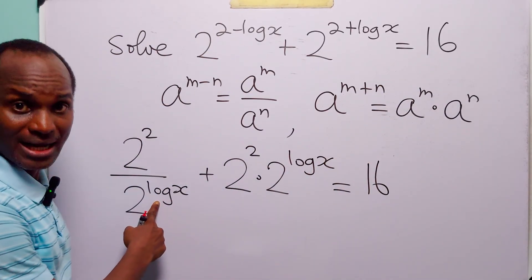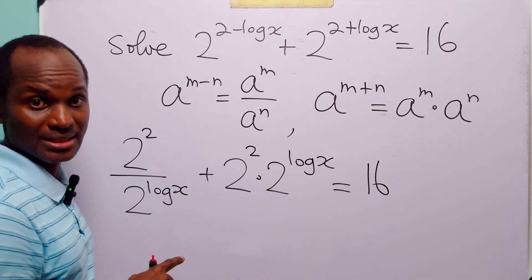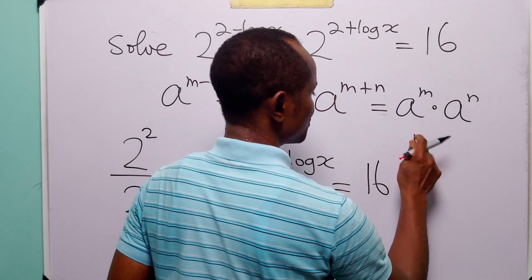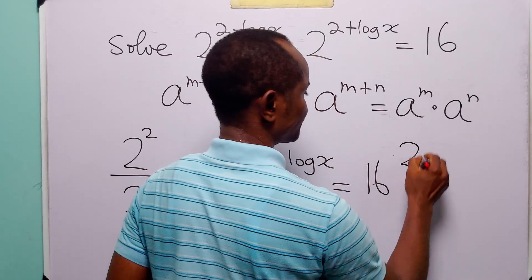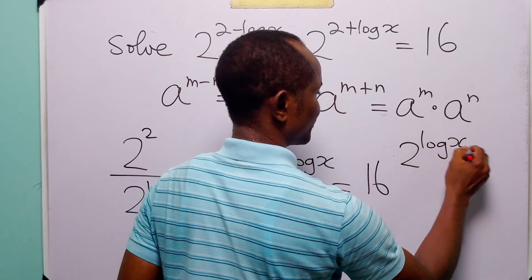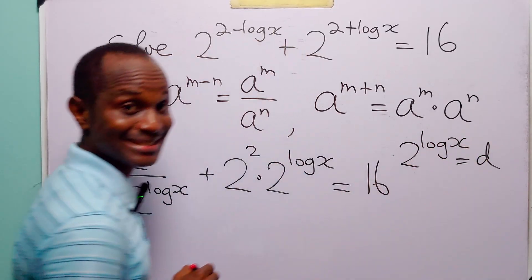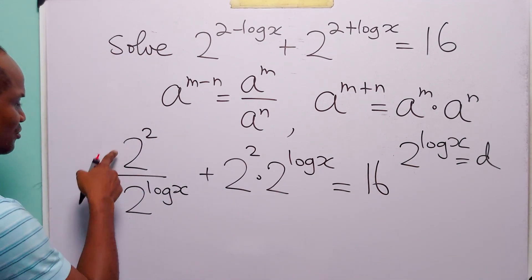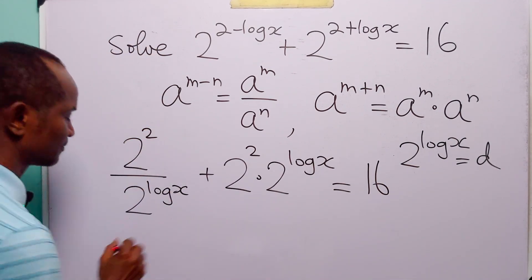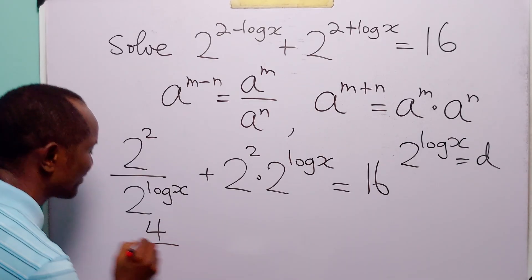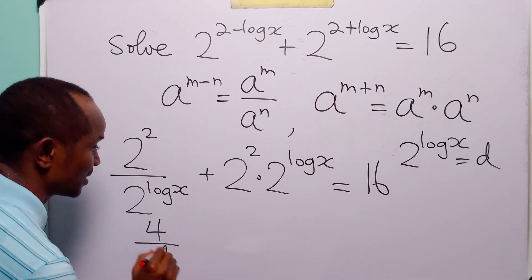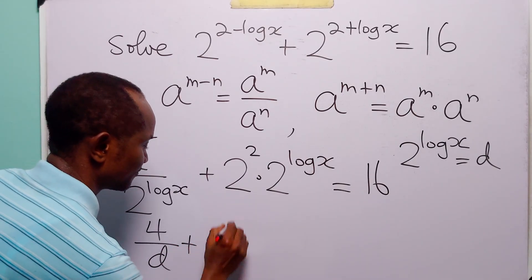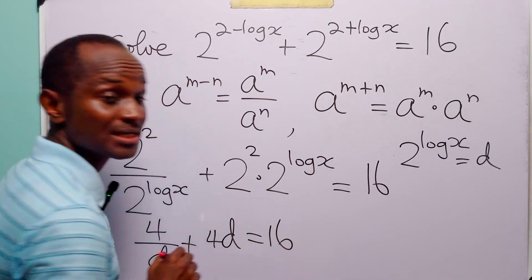Since we have 2 to the power log x in both terms, let us do a substitution. We let 2 to the power log x equal to d. With this substitution, the equation becomes 4 divided by d plus 4 times d is equal to 16.